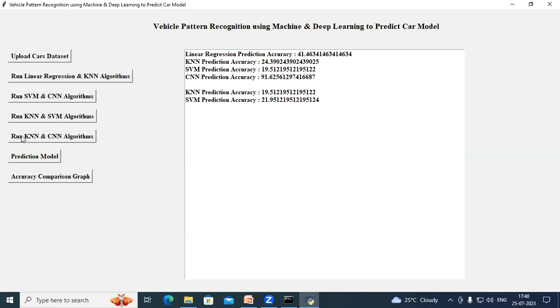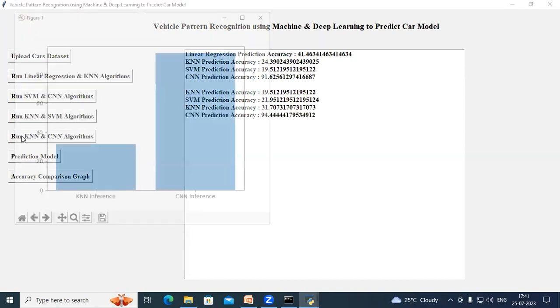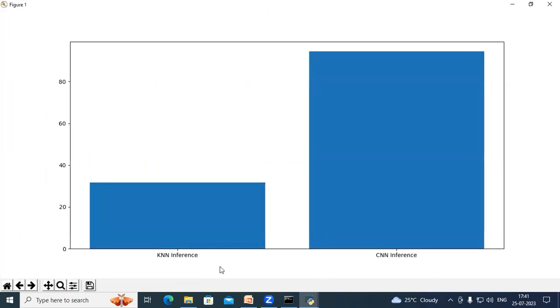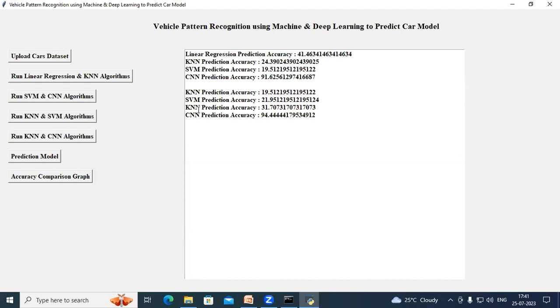Now click on run KNN and CNN algorithms button. So in this graph on x-axis, I have KNN inference and CNN inference and on y-axis, I have the accuracy. Close this graph and we can see the accuracy in the text box.